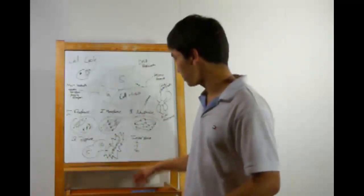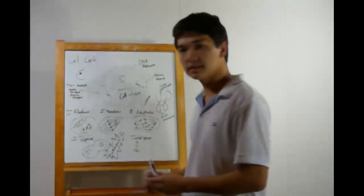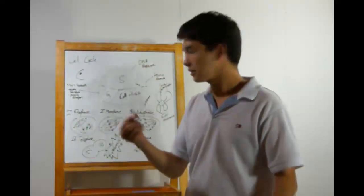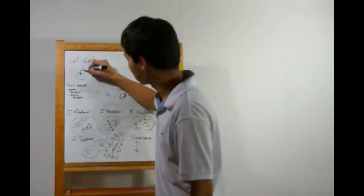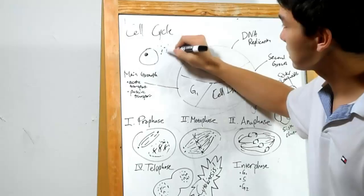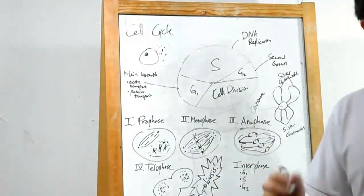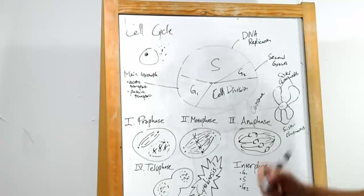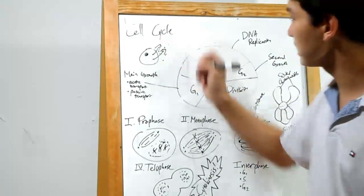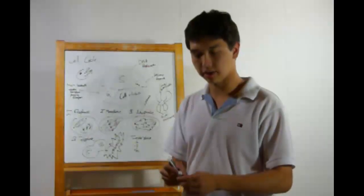The last type of passive transport is osmosis. This is very similar to diffusion, but instead of the concentrated substance moving, water moves. So let's say again there's a high concentration of something outside the cell, maybe salt. Water will move from inside the cell to the outside to equalize the concentration.